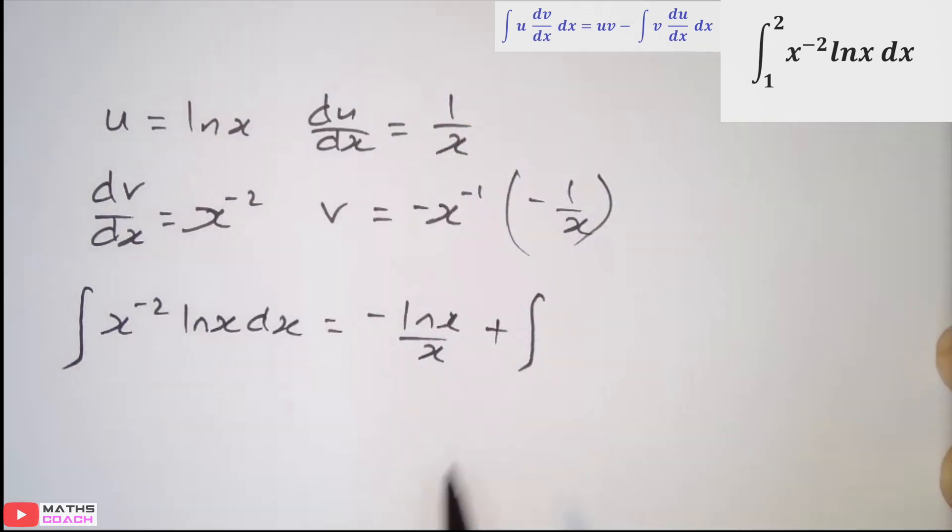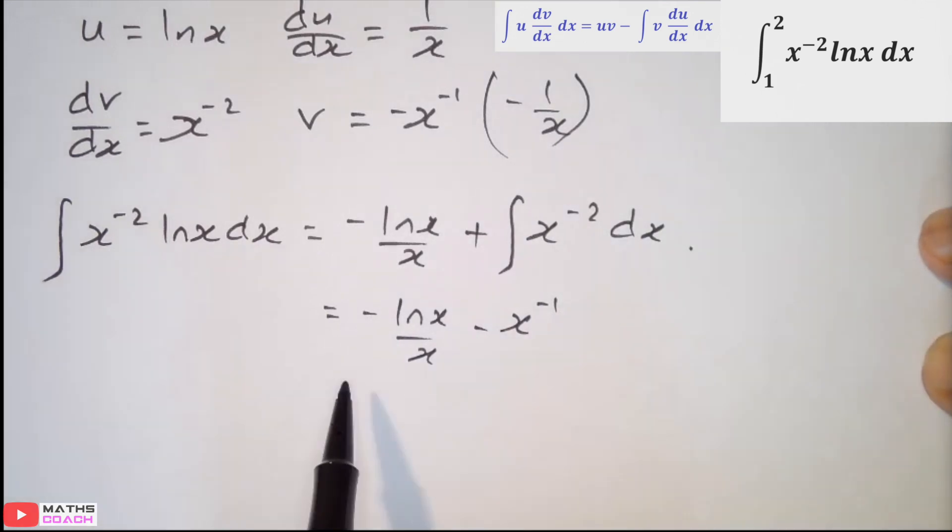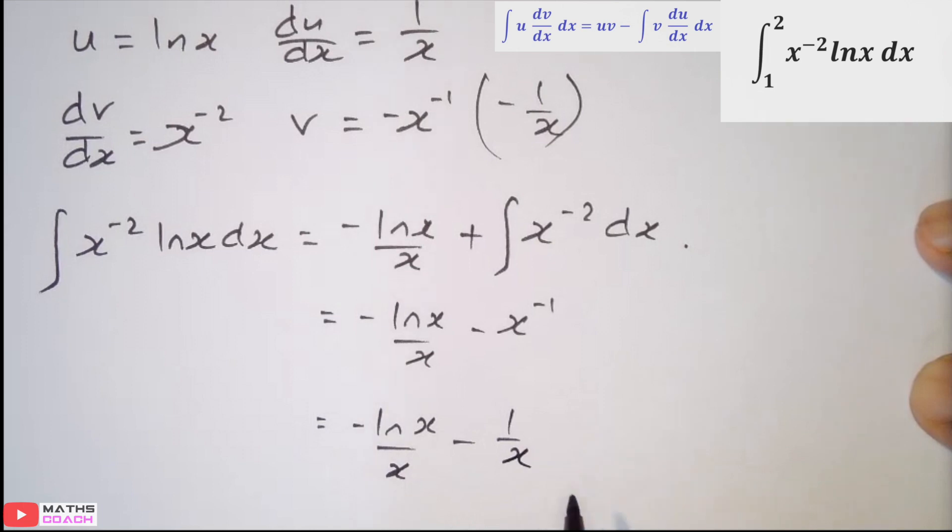And at this stage of your maths, you can write x to power minus 2. That's going to be easier to integrate in a moment. We can now drop our negative ln x over x. And the integration of x to power minus 2 will become x to power minus 1 with a minus. So let's tie that up.